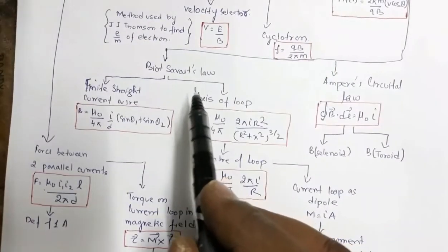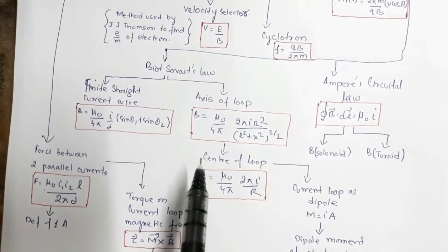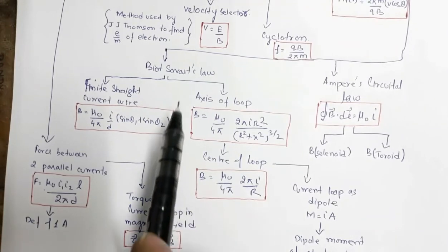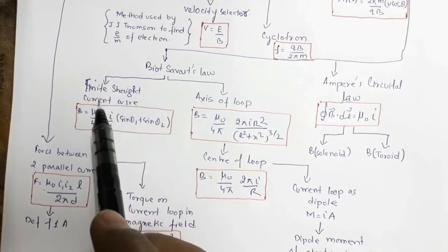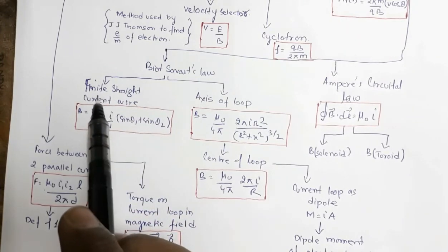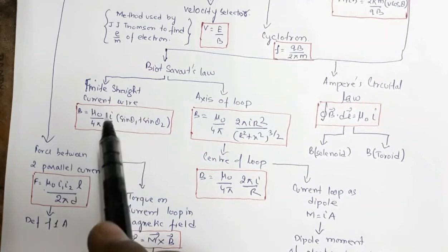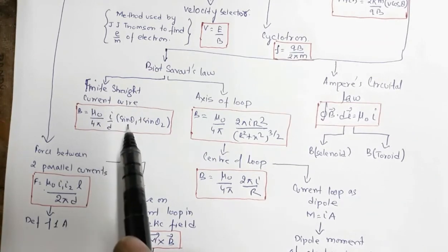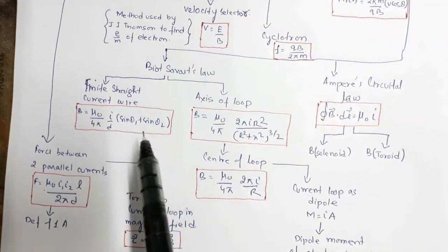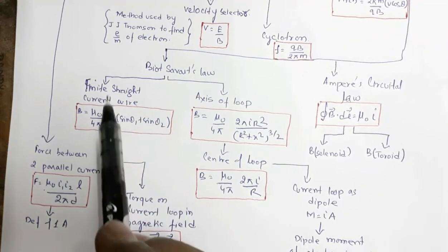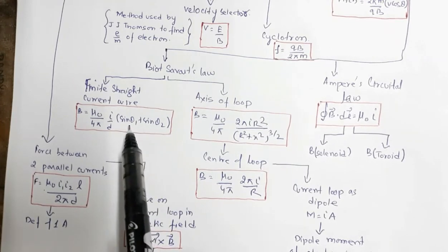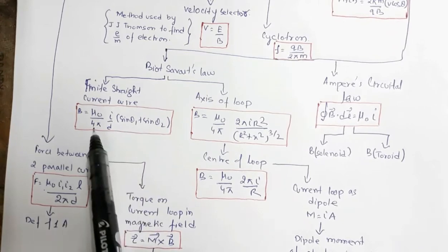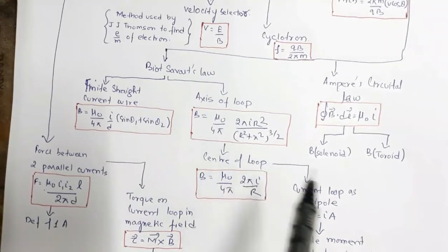Then we have the Biot-Savart law, used to calculate the strength of the magnetic field due to a current-carrying conductor. For a finite straight conductor, B = (μ₀/4π) × (i/d) × (sinθ₁ + sinθ₂). For an infinite wire, θ₁ and θ₂ are both 90°, giving B = μ₀i / 2πd.